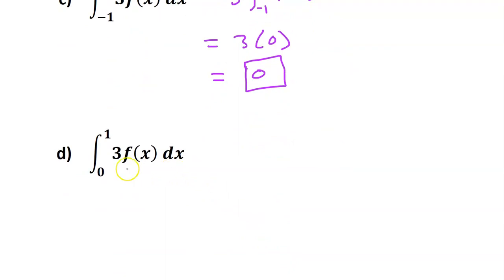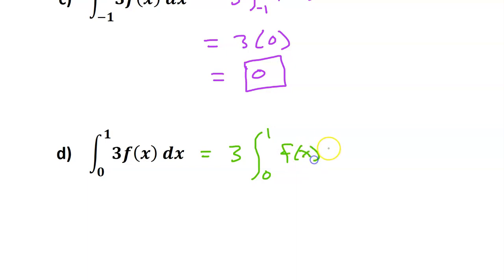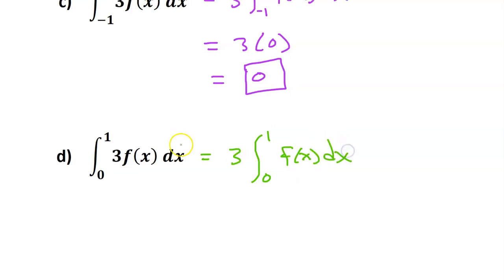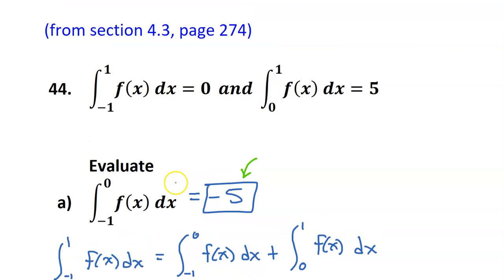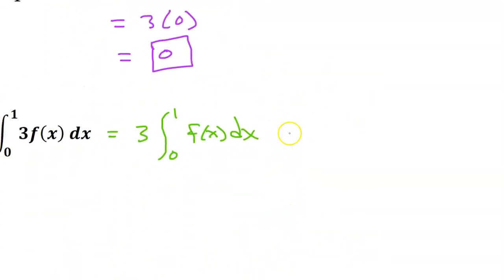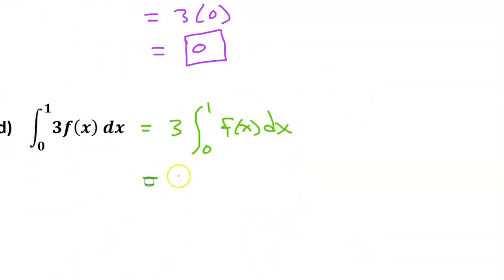For part D, I see a constant multiple. Let's bring this 3 out to the front. So this will be 3 times the integral from 0 to 1. We know the integral from 0 to 1 is 5, so this will just be 3 times 5, which is 15.